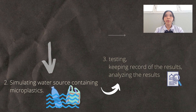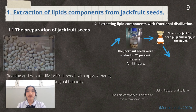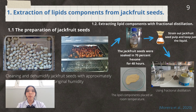In the first process, we prepared raw jackfruit seeds and dehumidified them. Next, we mashed them and then soaked them in 70% hexane for 48 hours. Then we extracted the lipid components with fractional distillation and stored the lipid components away from direct sunlight, dried at room temperature.